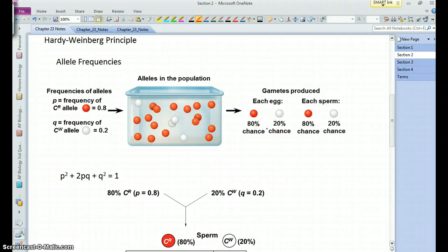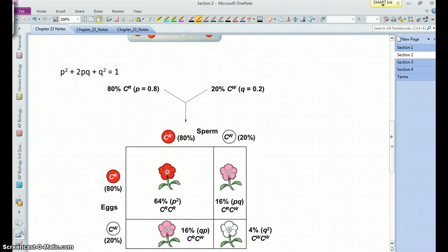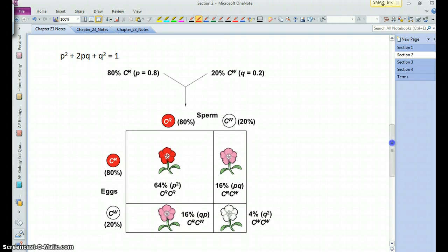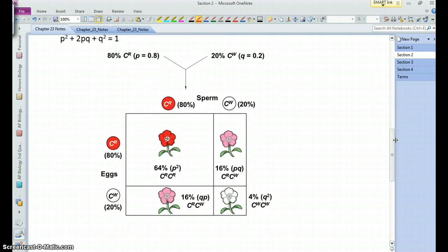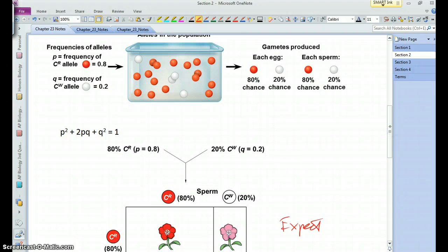And so when, in the population as a whole, when gametes are being made, essentially 80% of the gametes should get a red and 20% should get a white, and the same when you're making sperm cells. And so when you take those frequencies, those frequencies of those different alleles in our gametes, you'll come to particular frequencies of genotypes that you would expect in that population based on these allele frequencies.